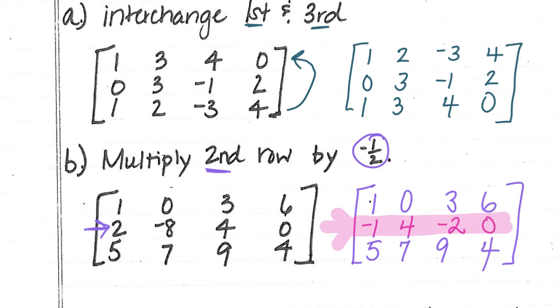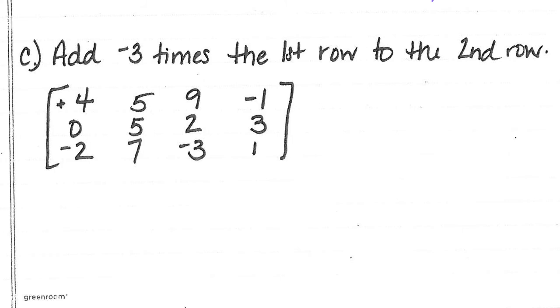The last operation that they're asking us to do is they say add negative 3 times the first row to the second row. Now when they give a question like this, it's really important to know that we are only changing the second row. So my first row is still going to be 4, 5, 9, negative 1. And my last row will still be negative 2, 7, negative 3, and 1.